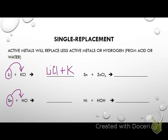Tin kicks out hydrogen and takes its place. We're going to go with tin as Sn²⁺, so the product is SnCl₂. When it kicks out hydrogen, it's going to bubble out of solution as a gas. Hydrogen by itself is going to be H₂ because it's a diatomic. Now I need to go back and balance it — the easiest thing to do is put a 2 in front of HCl, and it's balanced.